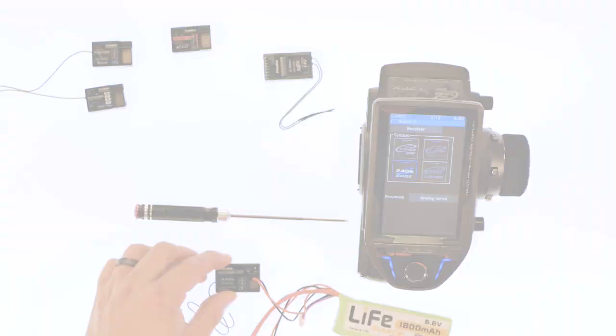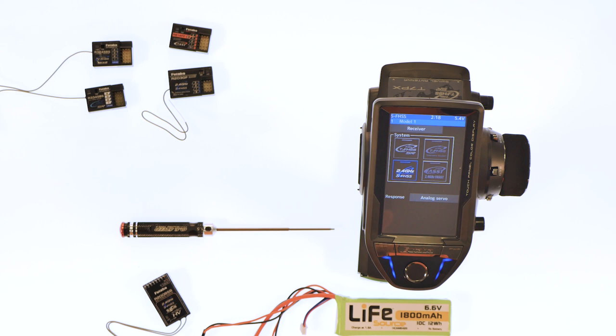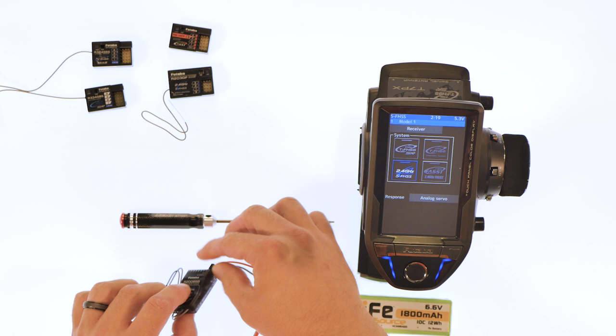Now we're going to show you if you want to utilize all seven channels on a 7PX radio. We have the R2008 SB receiver. This allows you to use winches, lights, extra channels on the actual vehicle. So all you rock crawlers or scale guys out there that want to utilize seven channels this is the receiver to have for you. So you actually use all seven channels. We'll show you how it links up real quick. It'll be SFHSS receiver so you make sure you have on the right icon.